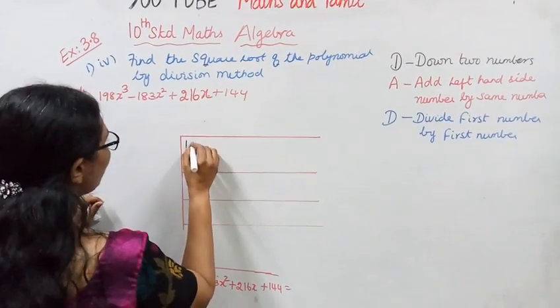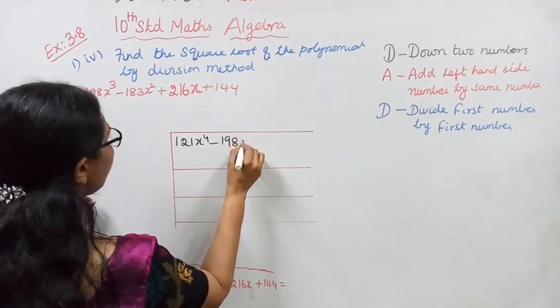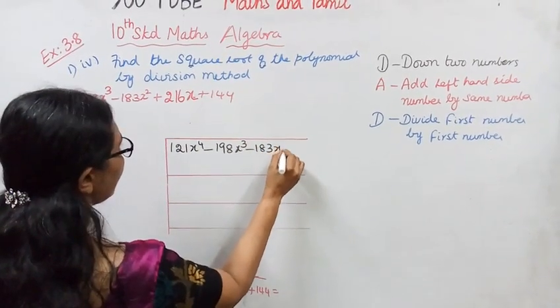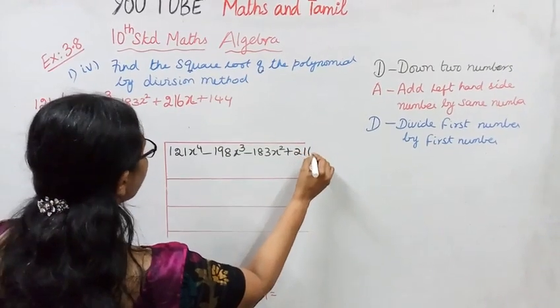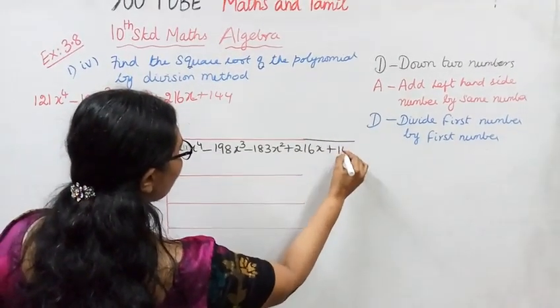How do you do that? 121x⁴ - 198x³ - 183x² + 216x + 144.